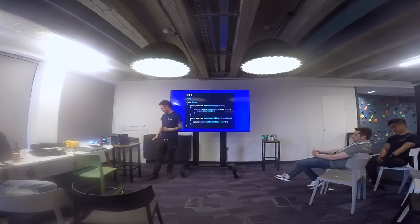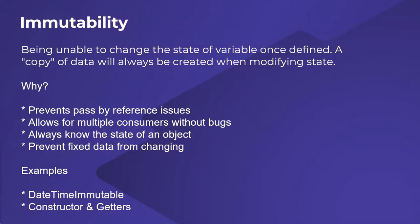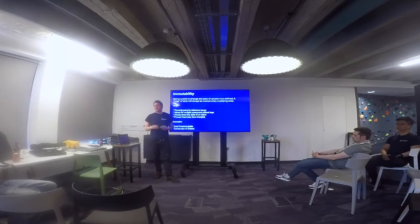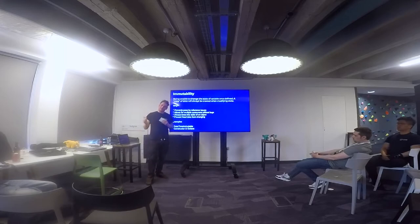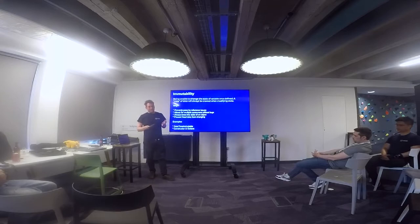Next we have immutability. In functional programming languages, pretty much every single thing you're working with — every bit of data — is going to be immutable. You're always receiving a copy; you never mutate state, you just can't. That's another thing that's really helped me when I've come back to object-oriented programming and started thinking about where you can use immutability.